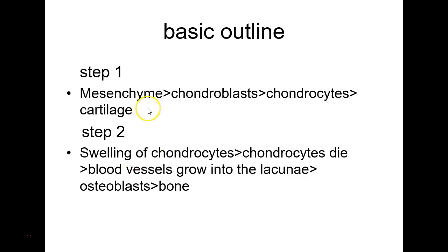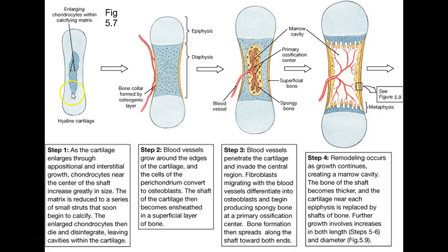Here's our basic outline for endochondral ossification. The mesenchyme or stem cells become chondroblasts. The chondroblasts become chondrocytes, and you end up with a little cartilage model of the bone to be. Then you get swelling of those chondrocytes in the middle — that's your primary ossification center. Those chondrocytes die, blood vessels grow in, and then the osteoblasts turn that area into bone. The same thing happens on the ends, giving you secondary ossification centers.